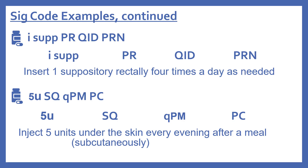Another example: 'I SUPP PR QID PRN' means insert one suppository rectally four times a day as needed. And '5U SQ QPM PC' means inject five units subcutaneously every evening after a meal — 5U is five units, SQ is subcutaneously (under the skin), QPM is every evening, and PC is after a meal.